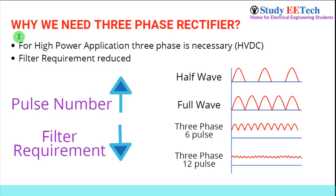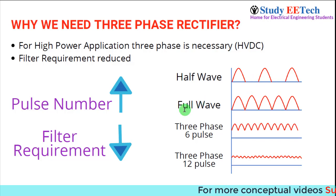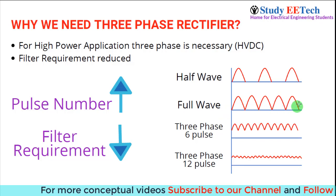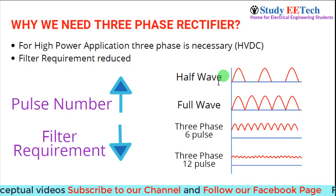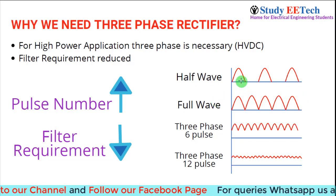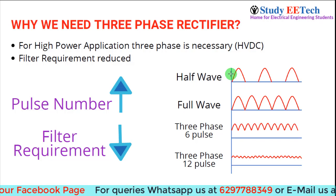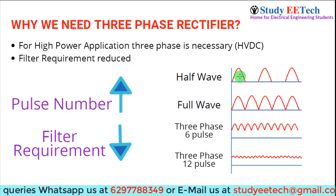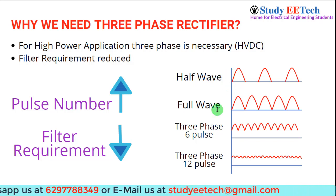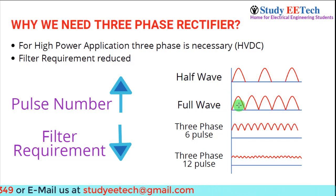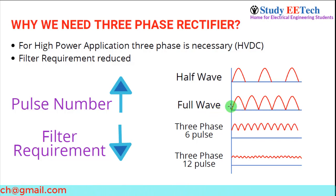First we will learn why we need three phase rectifier at all. For half wave rectifier we get this kind of voltage where the negative half cycle we do not get at the output. In case of full wave rectifier we get positive half cycle as well as the negative half cycle in the output. To extract DC from half wave or full wave rectifier we need to use a filter — meaning the inductor and the capacitor. Comparing the two, in case of full wave rectifier the filter requirement is lesser because the ripple factor is lesser.